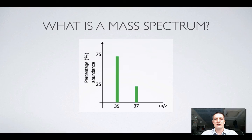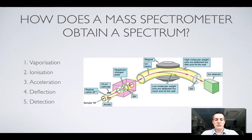Now we'll have a look at how it is that the machine actually gets to producing a graph like this over the next few slides. So first of all, let's just quickly name the five different processes that we need to be aware of in the mass spectrometer, and then we'll have a look at each one of them in detail.